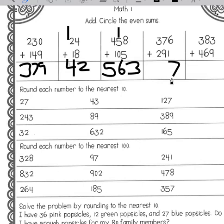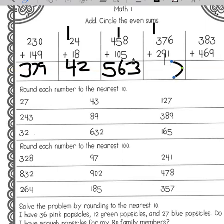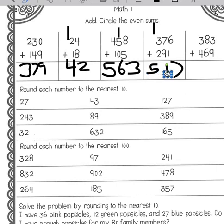Over here we have six plus one is seven, nine plus seven — count up from nine: ten, eleven, twelve, thirteen, fourteen, fifteen. And then three plus two is five, plus that one would be six.